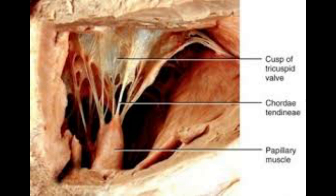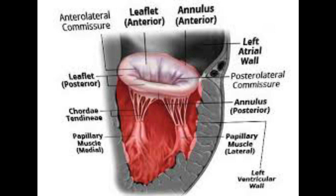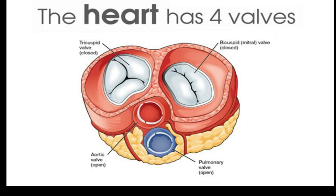The chordae tendinae are in turn attached to the papillary muscles located on the interior surface of the ventricles. These muscles contract during ventricular systole to prevent prolapse of the valve leaflets into the atria. There are five papillary muscles in total: three are located in the right ventricle and support the tricuspid valve, and the remaining two are located within the left ventricle and act on the mitral valve.